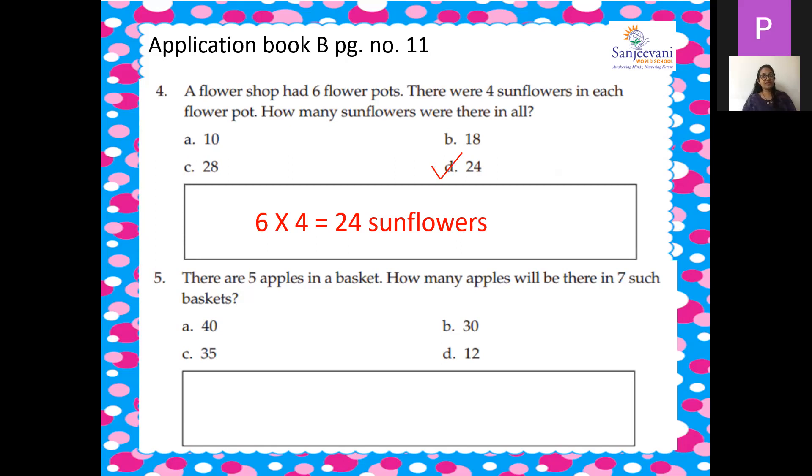There are 5 apples in a basket. How many apples will be there in 7 such baskets? So first I will write the number of baskets, how many? 7 into 5. So 35 apples in 7 baskets. So the answer is 35. You can just pause the video and you can write down the answer children.